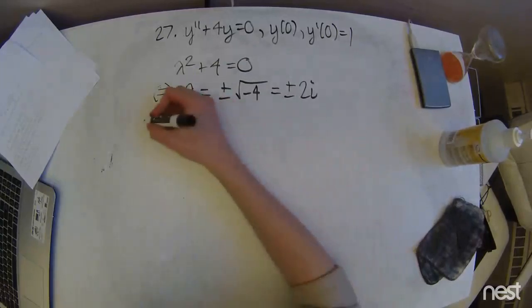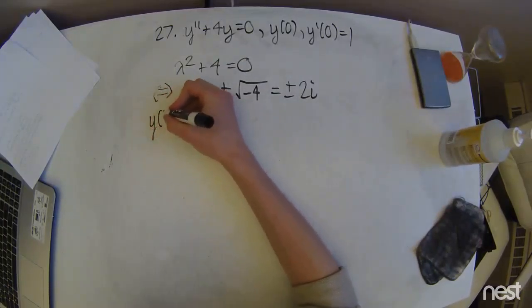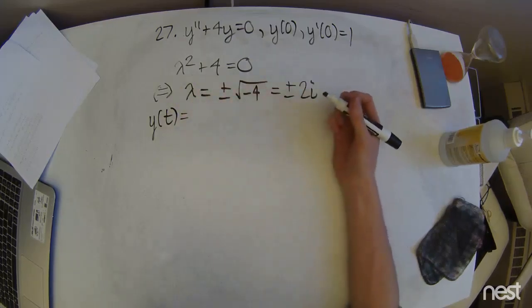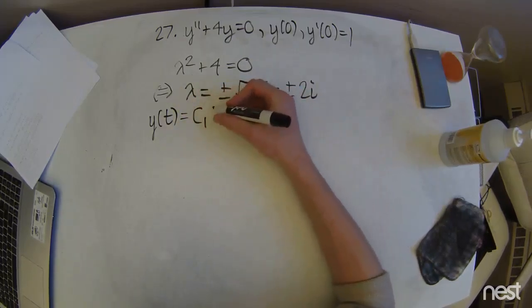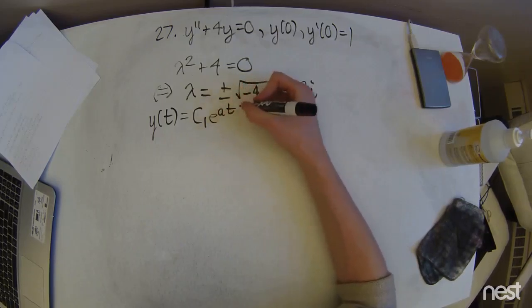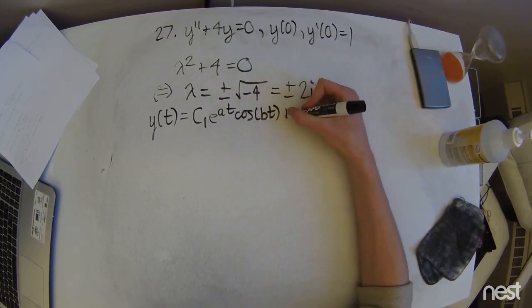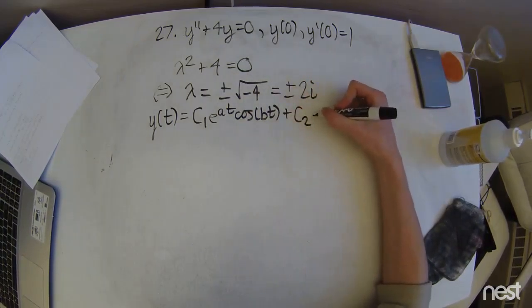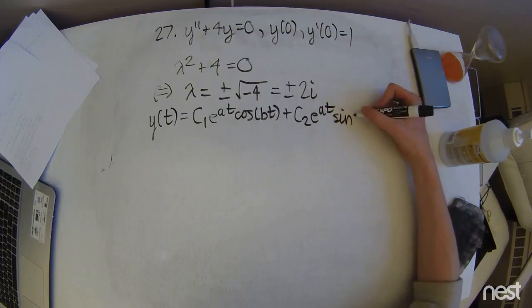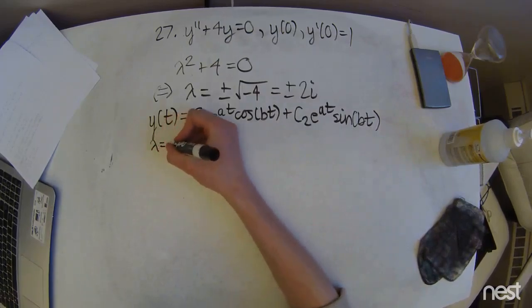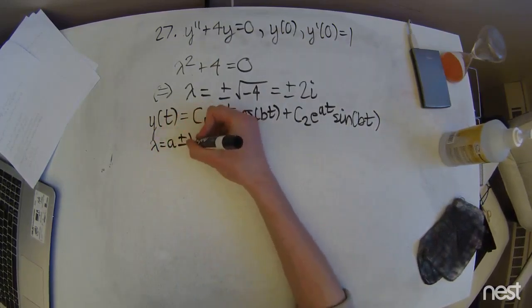Now, if we look back at our notes, we can remember that the general form of solution for this complex roots situation is going to look like c1 times e to the at cosine bt plus c2 e to the at times sine of bt. And that a and b are going to come from the complex number that looks like a plus or minus bi.